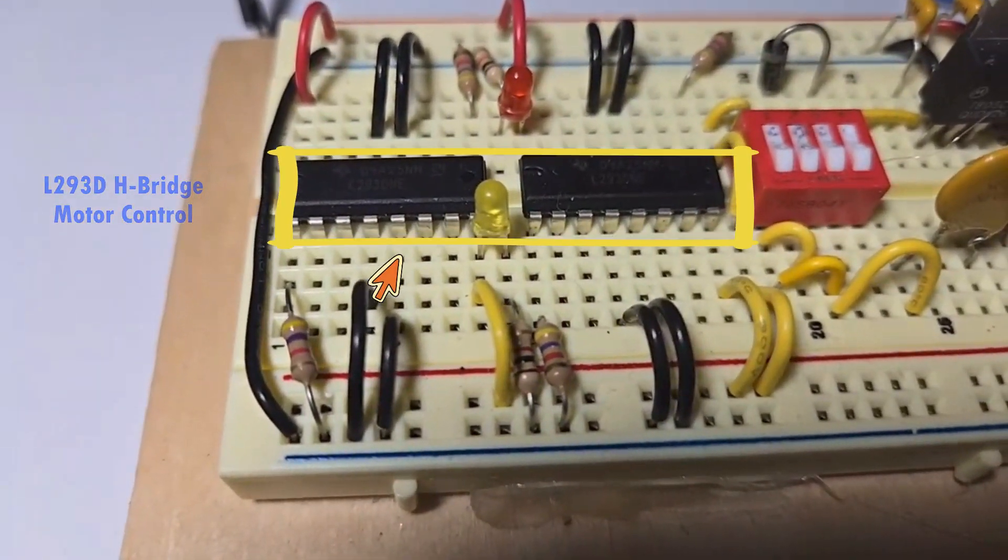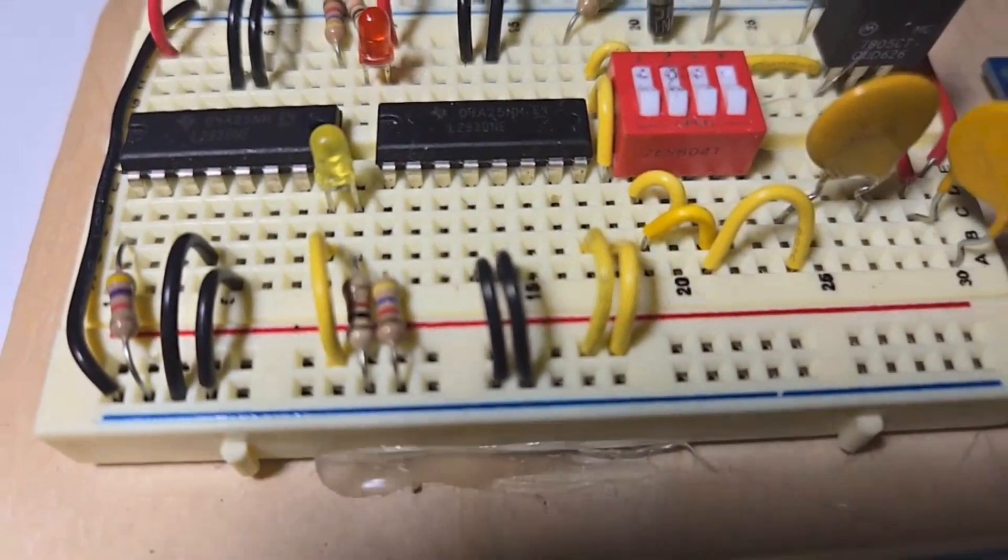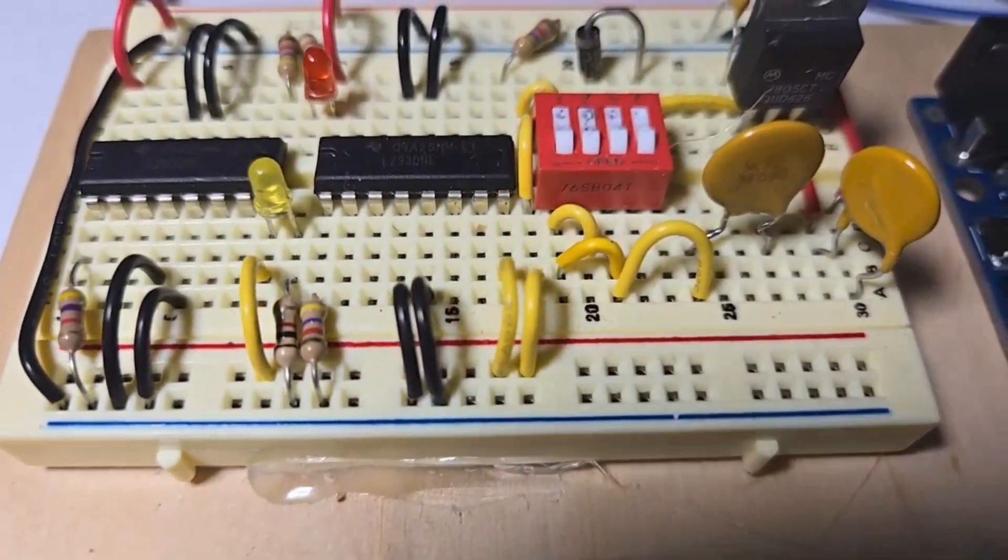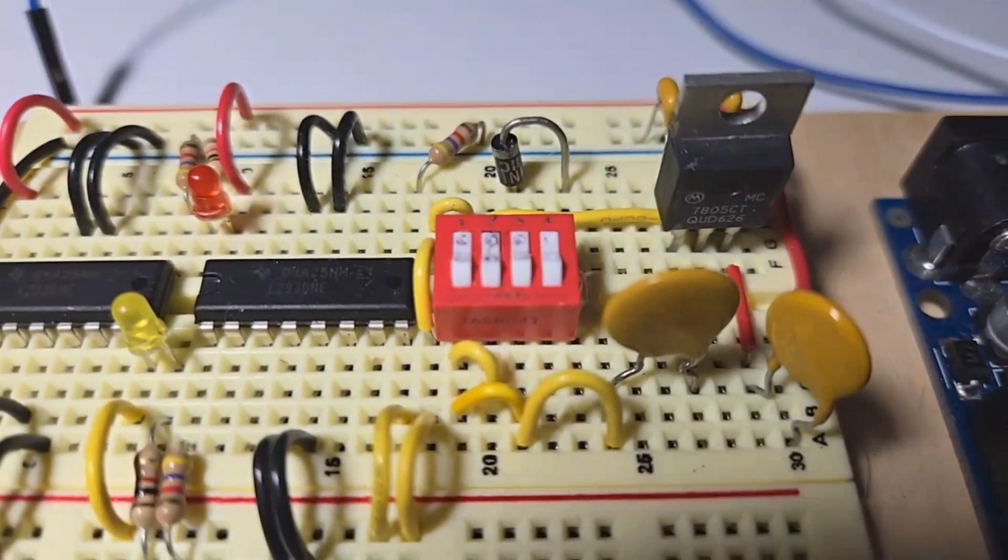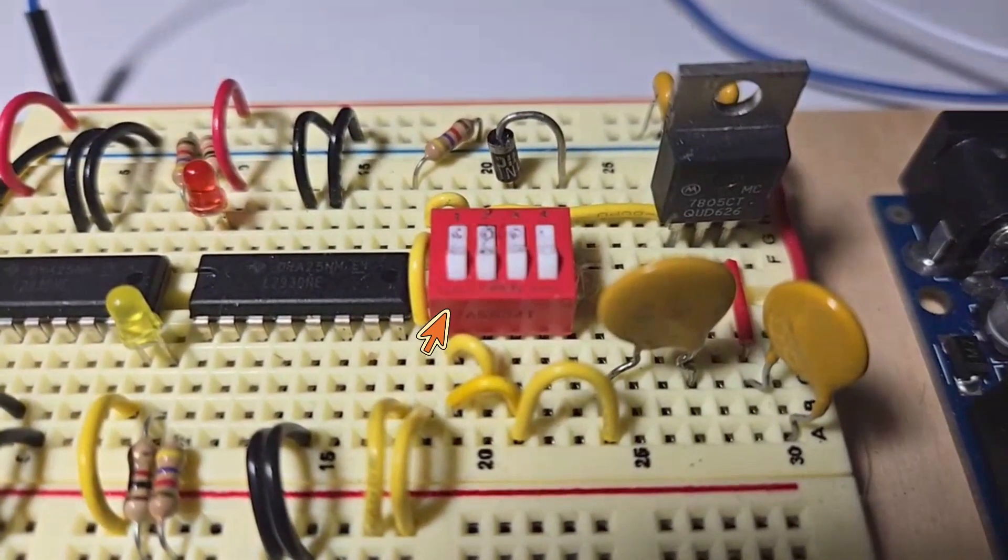That's the L293 h-bridge. There are two of them for the motor. The three switches control the five volt supply, the motor supply, and the Arduino supply. Switch one is used to control the power to VCC2. Switch two controls power to the plus five. Switch three provides power to V in on the Arduino.